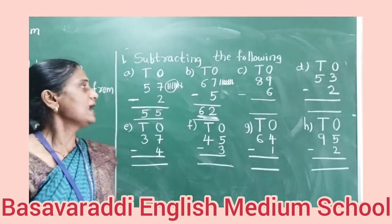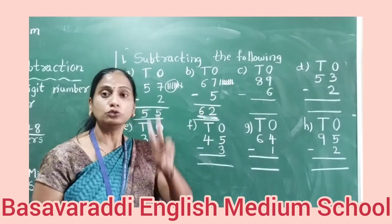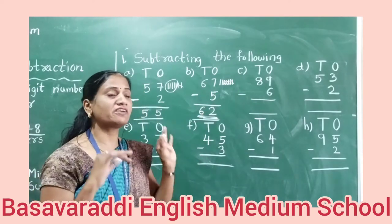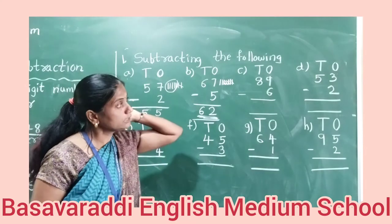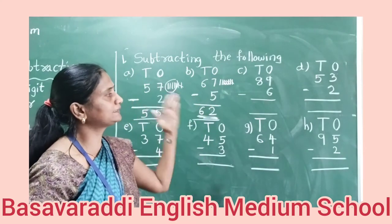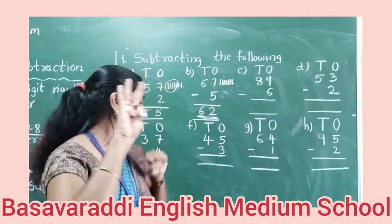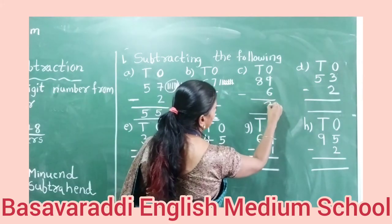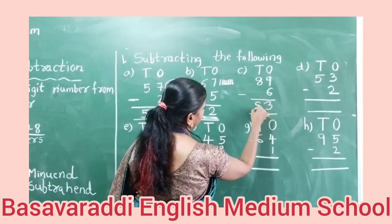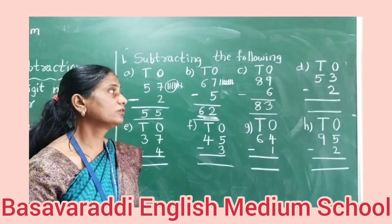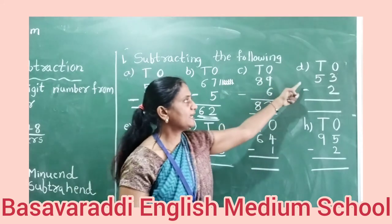Subtracting one digit from two digit. Example: eighty-nine minus six. Nine is bigger, subtract six — remaining three. Write down three. Tens place is eight — directly write down eight. The answer is eighty-three. Next: fifty-three minus two. First go to the ones place: three minus two equals one. Tens place: five — write five. The answer is fifty-one.